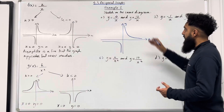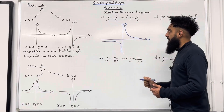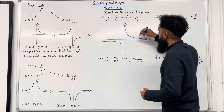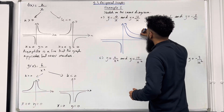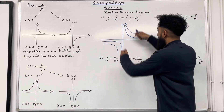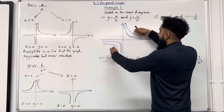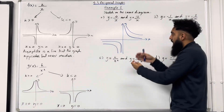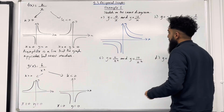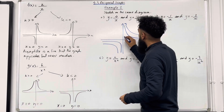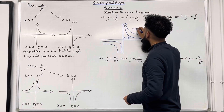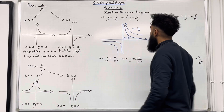Now we're going to sketch y equal 12 over x. The numerator is positive, so it will take on this shape. However, notice that the numerator here is 12, which is larger than the numerator here, which is 4. So how will this graph differ from the other? Well, it will be further away from the origin. As the numerator increases, the graph gets further away from the origin.